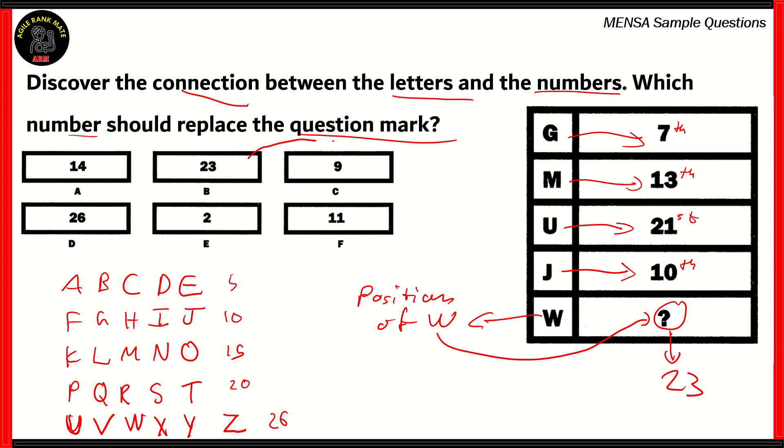However, if you look at our options, you can see that option B turns out to be the option containing 23. So therefore, that is the right answer. 14 would give us N, 9 would give us I, 26 would give us Z, 2 would give us B, and 11 would give us K. So therefore, option B, the number 23, is the right option when it comes to replacing the question mark because the 23rd letter of the alphabet is W.